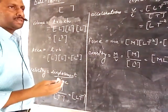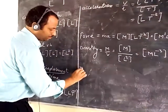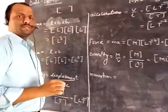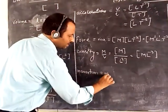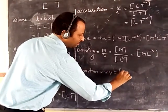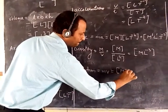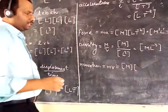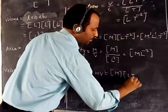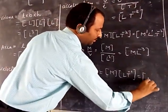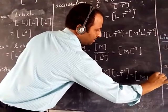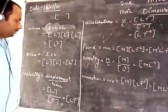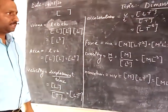Let us take one more example: momentum. Momentum is defined as the product of mass into velocity. The dimension of mass is M, and the dimension of velocity we calculated earlier is L T to the power minus 1. So the dimension of momentum is M L T to the power minus 1. In this way, you can find out the dimensions of every quantity.